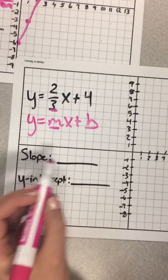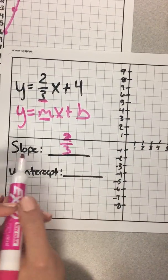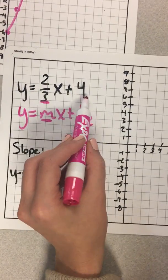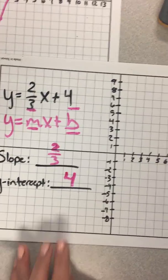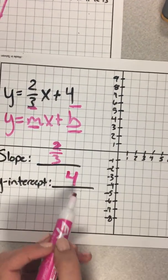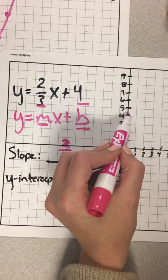Our slope is 2 thirds. And then our b, or our y-intercept, is 4. Now we can graph it. So we start with our y-intercept of 4. So on my y-axis, I'm going to find 4 right here.